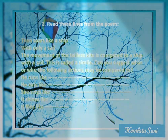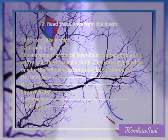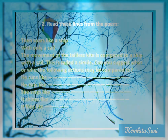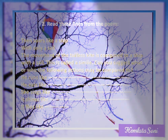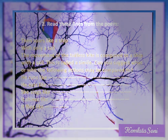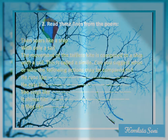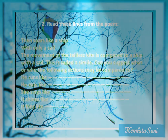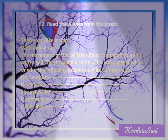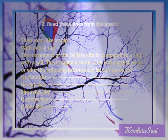Read these lines from the poem: Then soars like a ship with only a sail. The movement of the tailless kite is compared to a ship with a sail. This is called a simile — when we compare two objects by using the words 'like' or 'as', this is called the simile device.